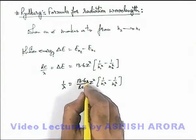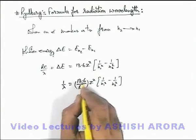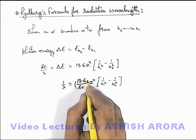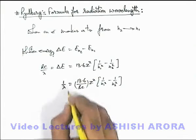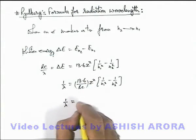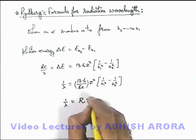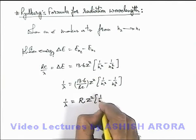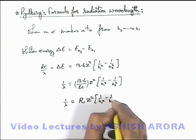Now this 13.6 by hc, and this 13.6 can be taken in electron volt, this can be considered as a single constant which is written as R, Z squared, 1 by n1 squared minus 1 by n2 squared.